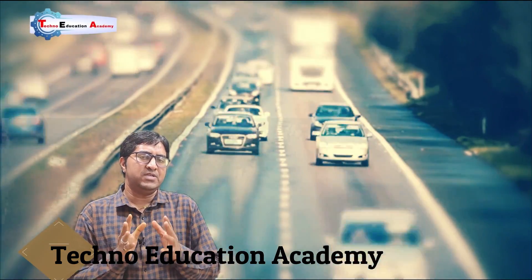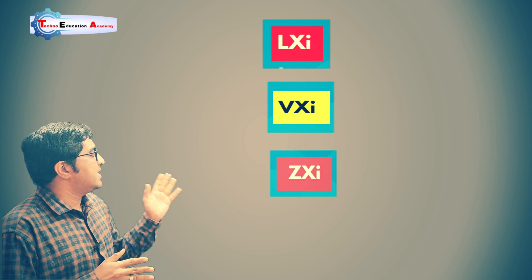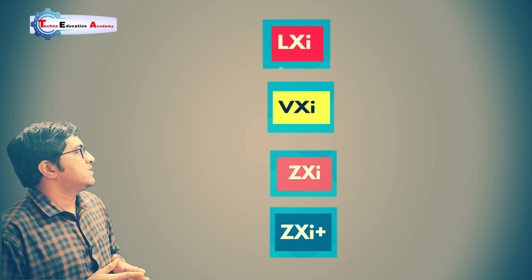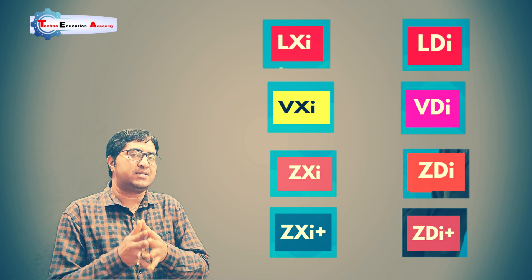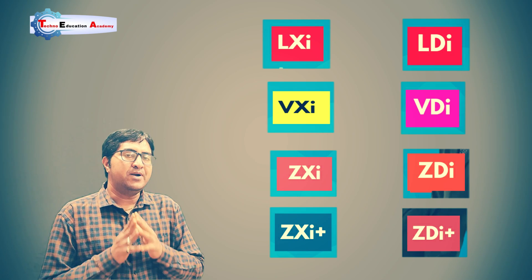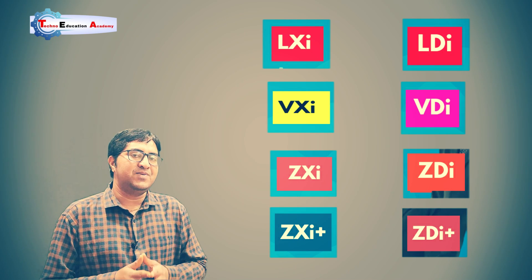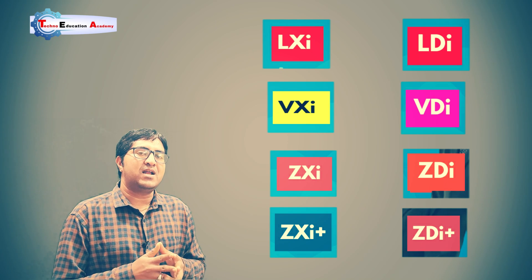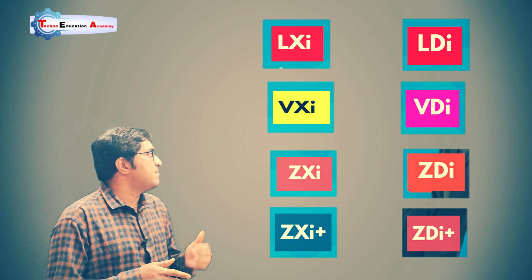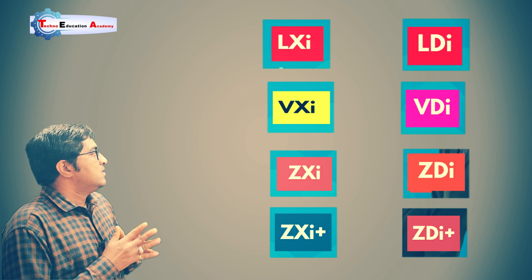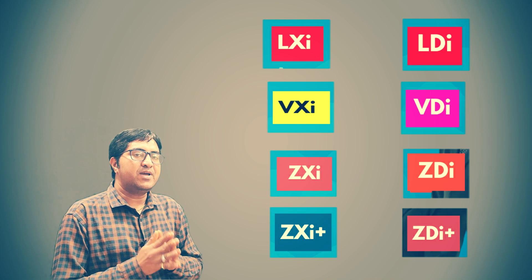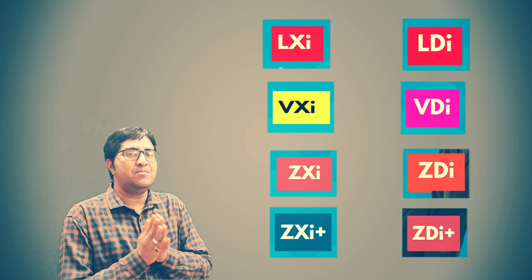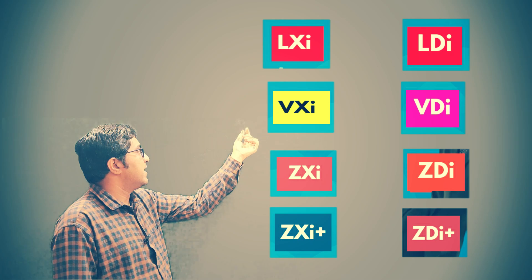In Maruti cars, you have seen on the backside of the car: LXI, VXI, ZXI, ZXI Plus, and in diesel models: LDI, VDI, ZDI, and ZDI Plus. What does it mean? In this video lecture, I will give you a brief introduction about this feature — the suffix XI and the suffix DI.